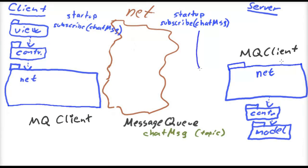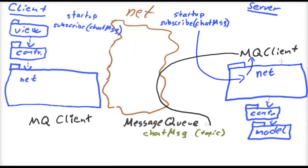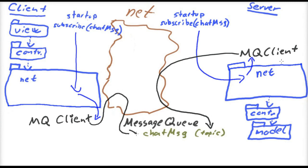Let's draw the subscribe call from the client and the server. When it's time to register a subscription, the startup code makes a call to the net package, which handles all interaction with the message queue client. In the net package, we instruct the message queue client to subscribe to the topic, and the message queue client will perform the network call and actually register this subscription. The same thing happens on all clients and also on the server.